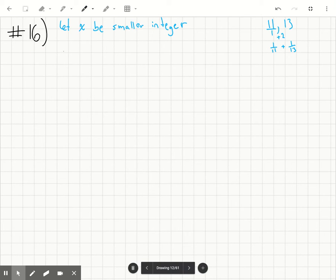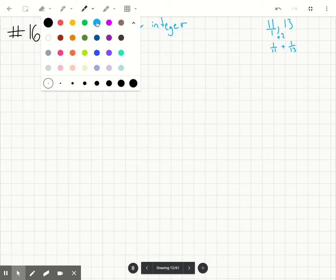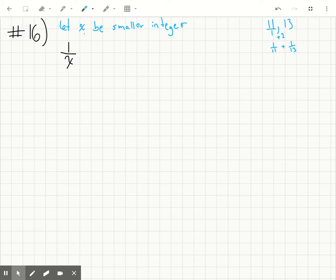So if that's the case, we're saying the sum, so if we add them together, the sum of the reciprocal. So if x is the number, 1 over x would be the reciprocal. And let x plus 2 be the larger.